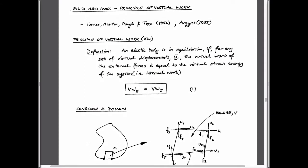The first finite element methods came from a very physical approach using the idea of internal virtual work being equal to external virtual work. An elastic body is in equilibrium — satisfying F equals MA — if accelerations are zero and the sum of forces is zero. An elastic body is in equilibrium if for any set of virtual displacements, the virtual work of the external forces equals the virtual strain energy in the system. This is simply saying that work done on the outside has to be stored inside.